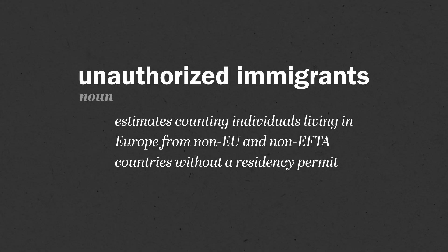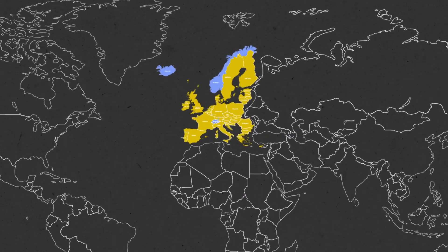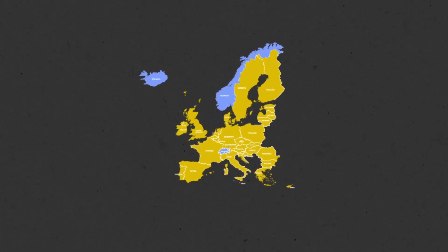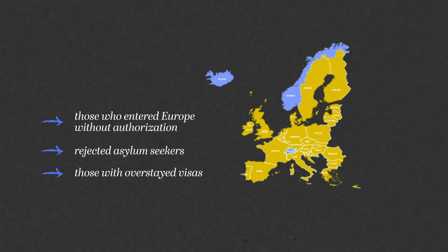Before we explain how we got this range, let's first define unauthorized immigrants. Our estimates count individuals coming from outside EFTA countries now living in Europe without authorization. This includes those who entered Europe without authorization, rejected asylum seekers, and others who entered lawfully but overstayed visas.